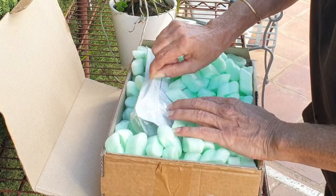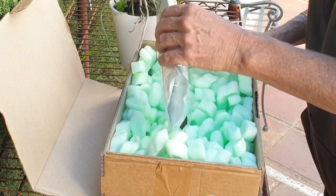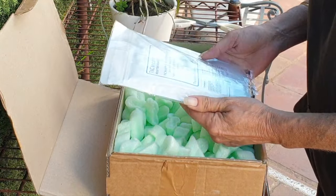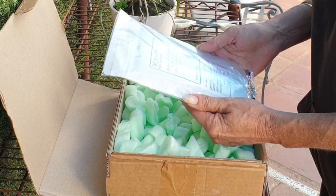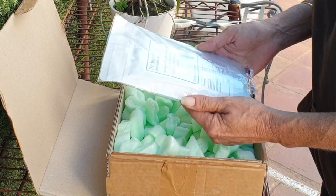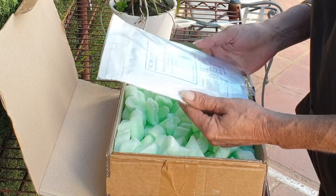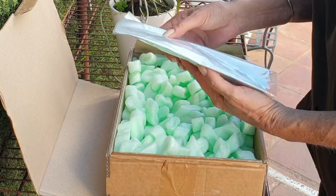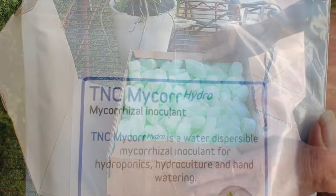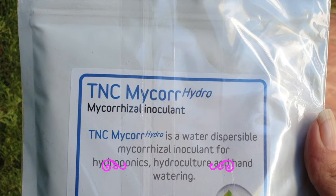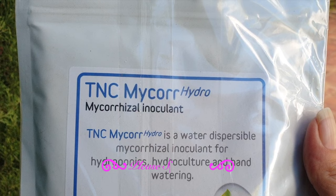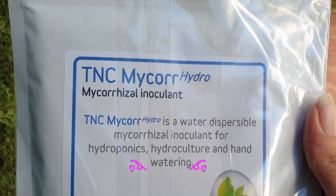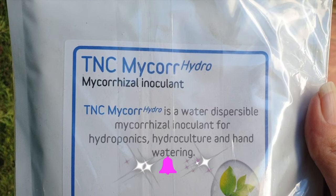In the case of nitrogen, orchids usually obtain it in a pre-processed form from the organic matter in their growing medium or from the activities of associated microorganisms, rather than fixing atmospheric nitrogen directly. Orchid mycorrhizal fungi play a crucial role in nutrient uptake, assisting orchids in accessing nutrients that might otherwise be unavailable to them. While orchids do not directly fix nitrogen in the same way other plants do, their intricate association with mycorrhizal fungi contributes to their ability to thrive in specific ecological niches and diverse habitats.